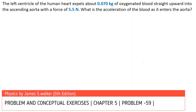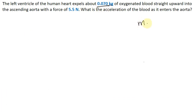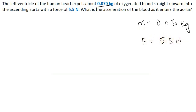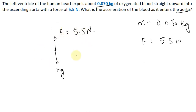In this question, the left ventricle of the human heart expels about 0.070 kg of oxygenated blood straight upward with a force of 5.5 Newton. Our aim is to calculate the acceleration of the blood as it enters the aorta. Drawing the free body diagram: gravity force mg acts downward, and the heart pumps the blood upward with a force of 5.5 Newton.